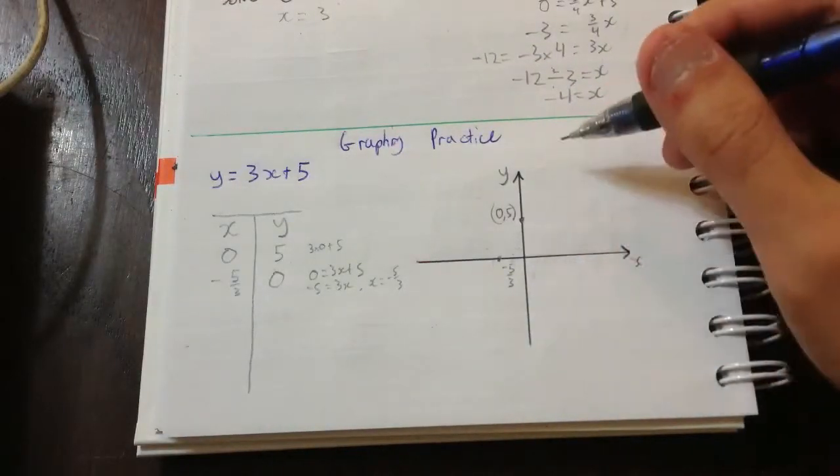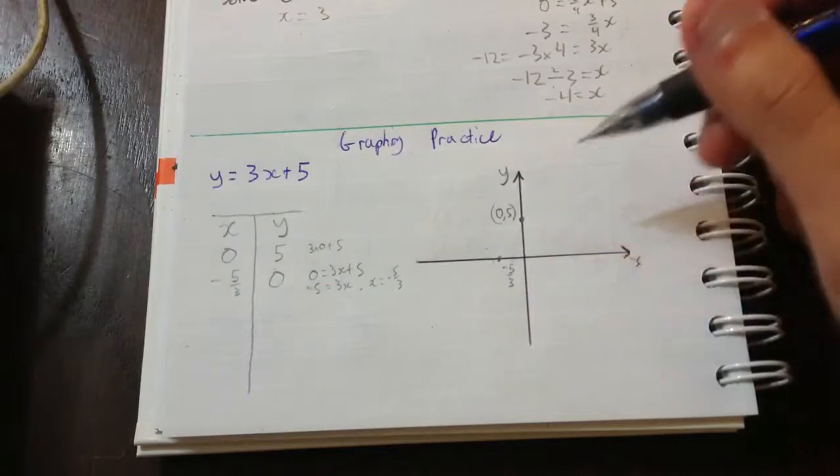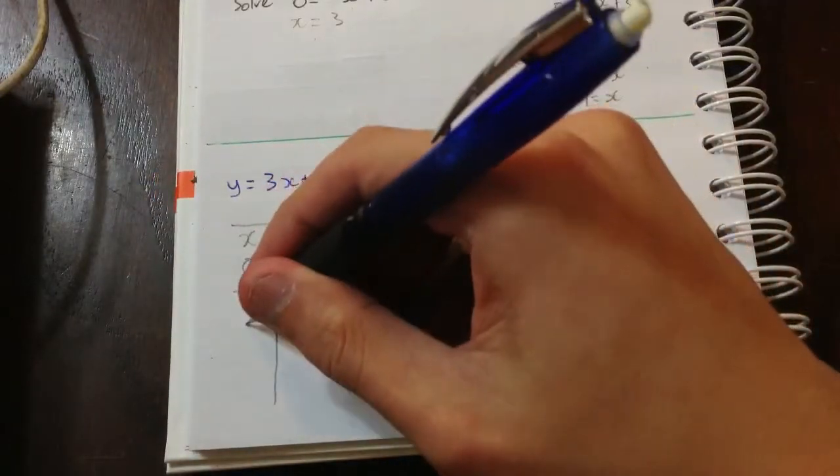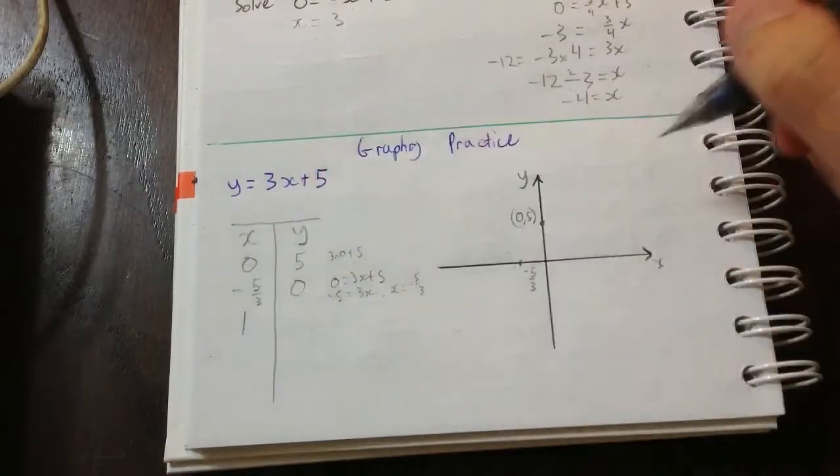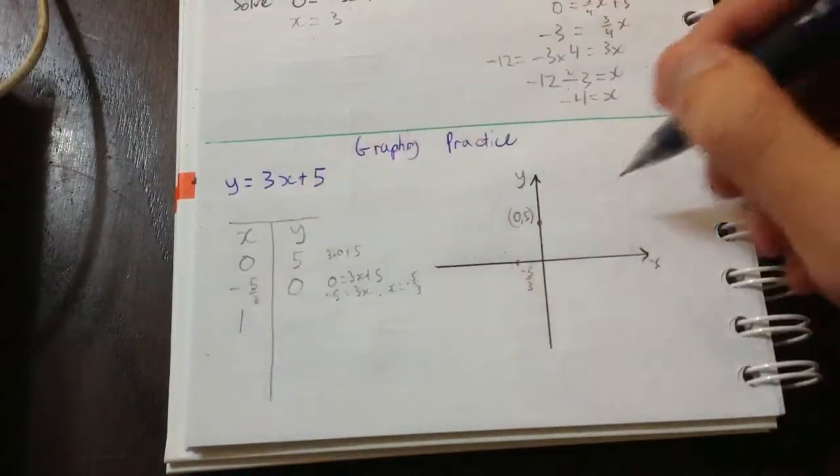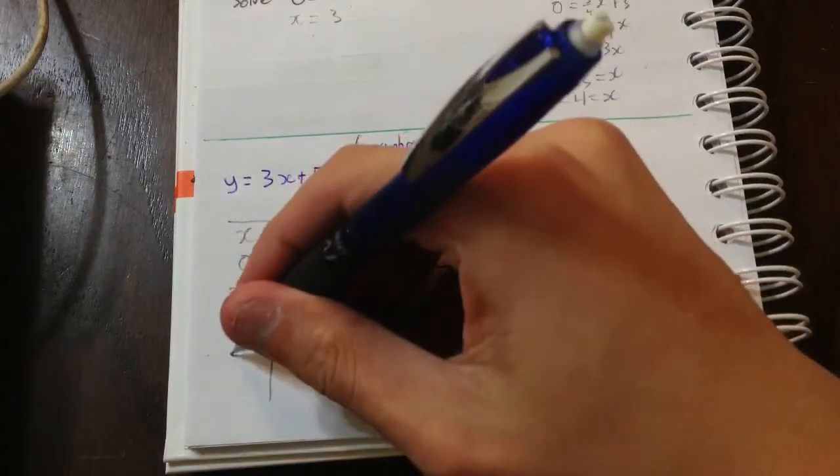And any other points we need? Not for a linear equation. But let's just put one in just to be sure. Just to be safe. So let's put x equals 1. In fact, I'll put a few more for you. x equals 1 and x equals... Let's make it minus 3.